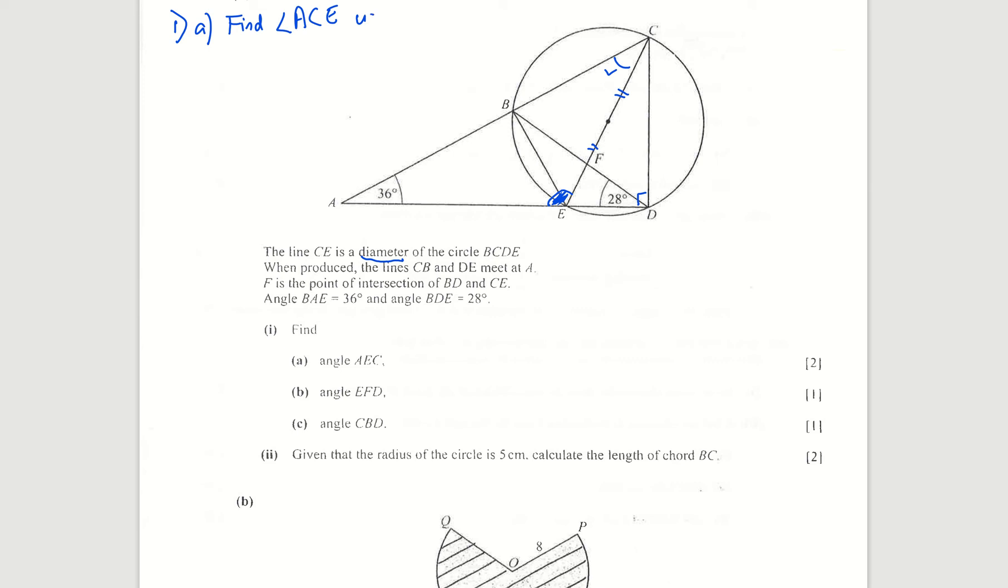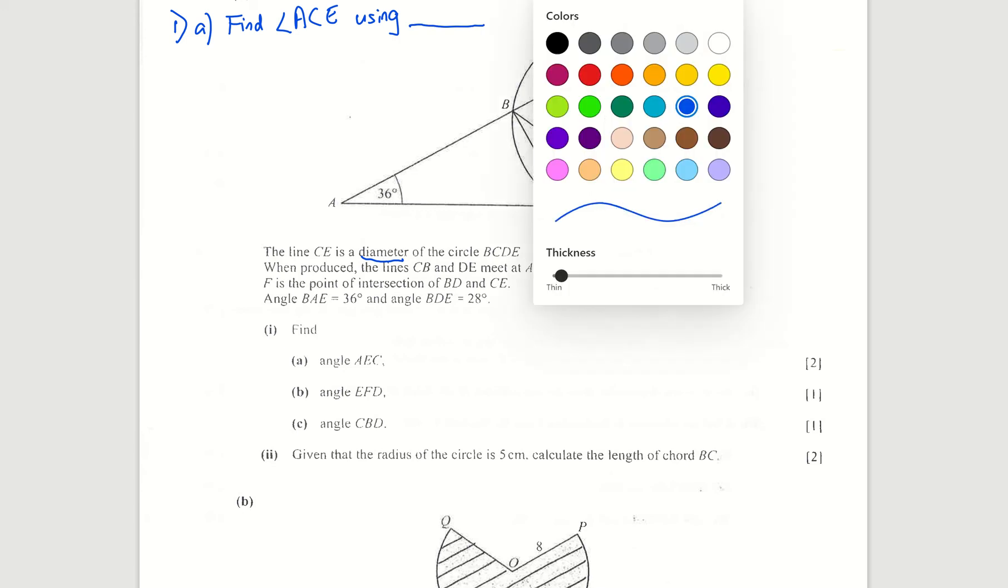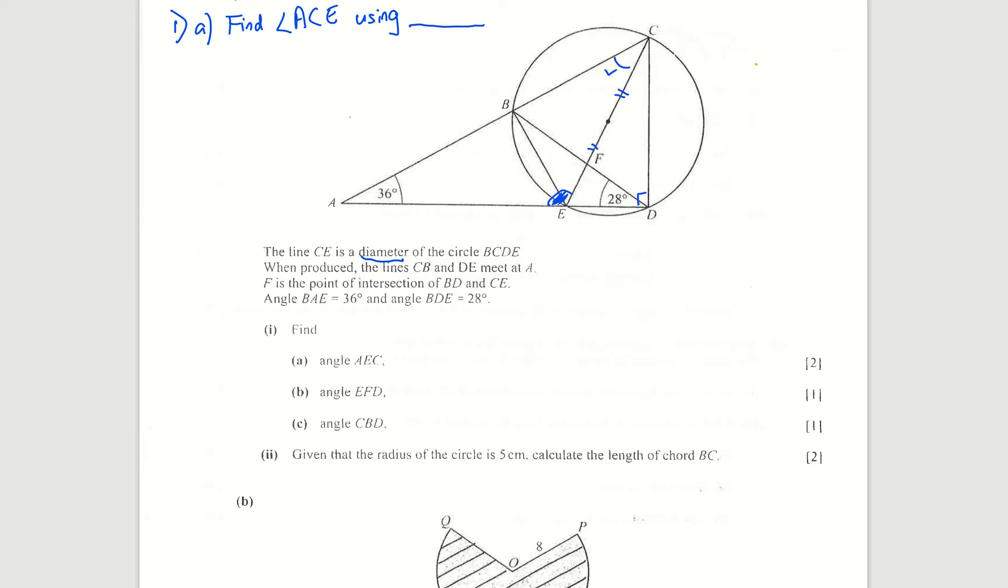Using something, right? So ask yourself, ACE. So I'll use a different color. So ACE is actually formed by B and E, right? Because if I go down, it's actually formed by these two points. And B and E actually forms angle D. So I know that ACE is actually 28 degrees.